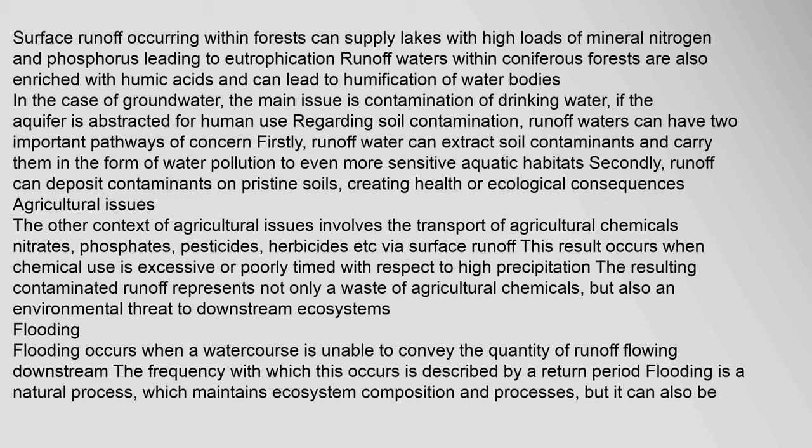Agricultural issues involve the transport of agricultural chemicals — nitrates, phosphates, pesticides, herbicides — via surface runoff. This result occurs when chemical use is excessive or poorly timed with respect to high precipitation. The resulting contaminated runoff represents not only a waste of agricultural chemicals, but also an environmental threat to downstream ecosystems.